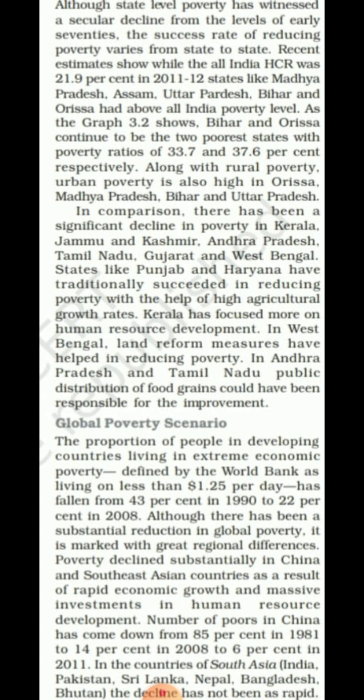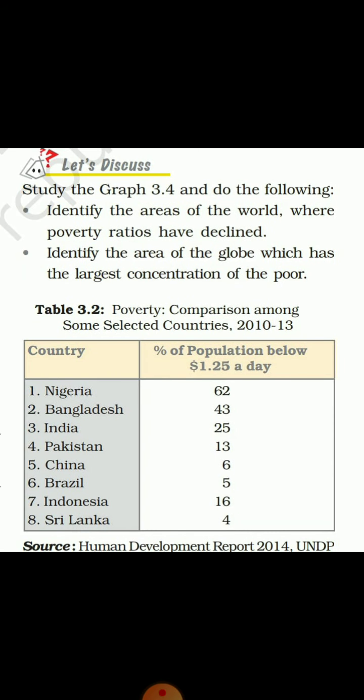According to 2011 data, China's poverty has come down further to 6 percent. However, this type of rapid economic development is not observed in other South Asian countries like India, Pakistan, Sri Lanka, Nepal, Bangladesh, and Bhutan. Table 3.2 shows the percentage of population below the poverty line: Nigeria 62%, Bangladesh 43%, India 25%, Indonesia 16%, Pakistan 13%, China 6%, Brazil 5%, and Sri Lanka 4%.